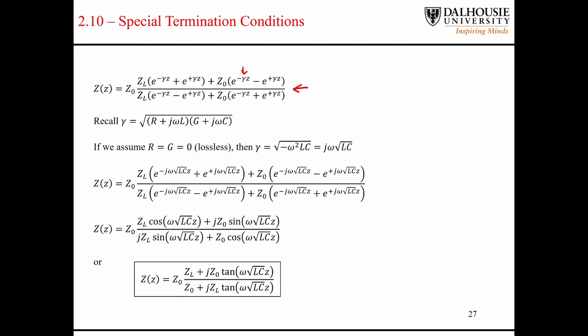We want to see what we can do with these propagation constant terms here. So one simplification is that we're going to assume that our transmission lines are lossless. Hopefully you see the effect of setting the resistance and the conductance to zero.